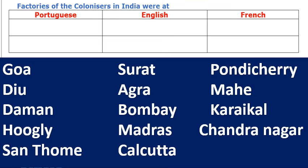The French had their market places at Pondicherry, Mahe, Karikal, and Chandranagar.